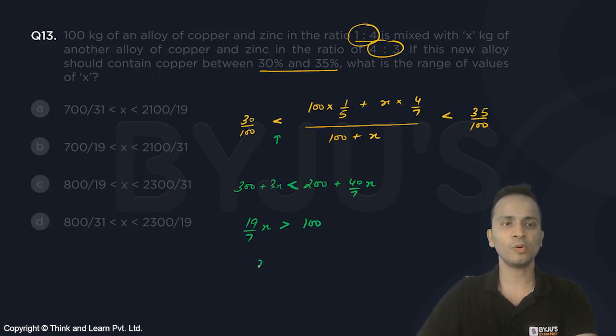So x will be greater than 700/19. Now we need to find out the range of values of x, so we know that x should be greater than 700/19.